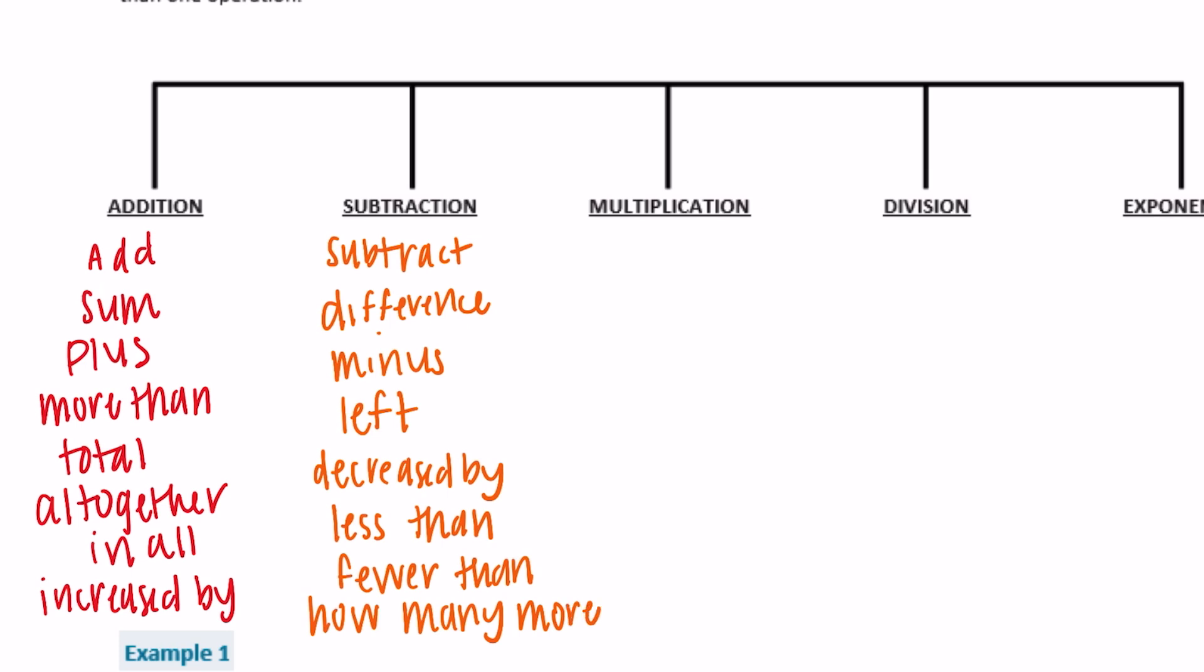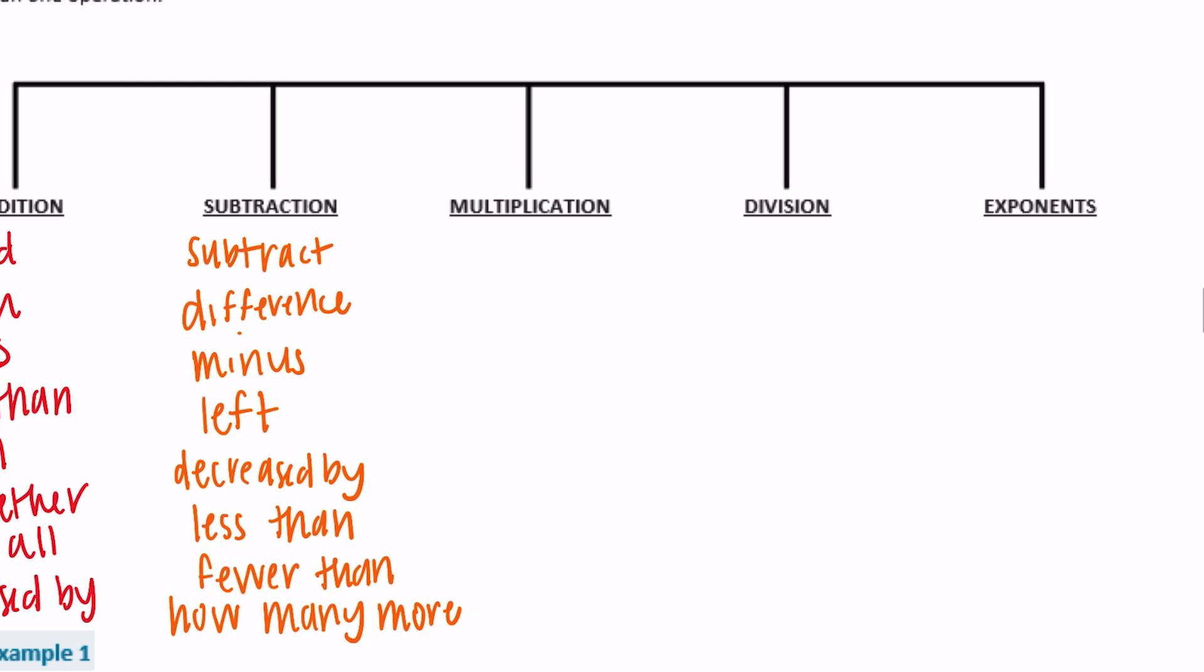Okay, multiplication. So when we're multiplying, you might say multiply, could say the answer to a multiplication problem is called the product, maybe times. The word of always means times. It says double or triple or quadruple, any of those would be multiplying, each, or as much.